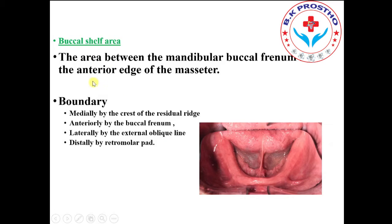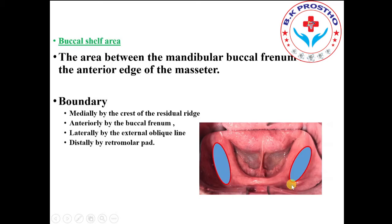The buccal shelf is the area between the mandibular buccal frenum and the anterior edge of the masseter muscle. Bilaterally, this is the primary supporting structure or primary stress-bearing area for the mandibular denture. The buccal shelf area is bounded: medially by the crest of the residual ridge, anteriorly by the buccal frenum, laterally by the external oblique ridge, and distally by the retromolar pad.